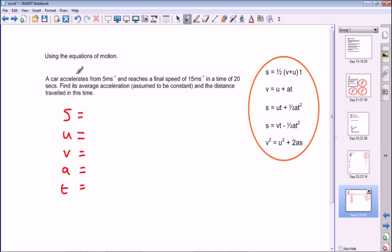So let's have a look at the numbers. We'll read the question: A car accelerates from 5 meters per second and reaches a final speed of 15 meters per second. So we've got two speeds there and we know that this one's the initial velocity, so that's u, and this one's the final velocity, so that's v. So we can write those in: u is 5 meters per second and v is 15 meters per second.